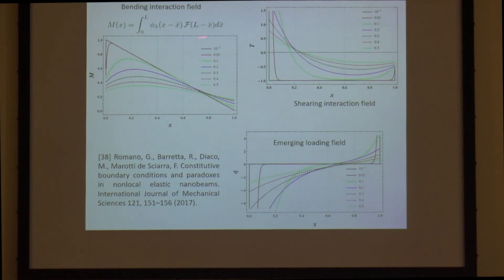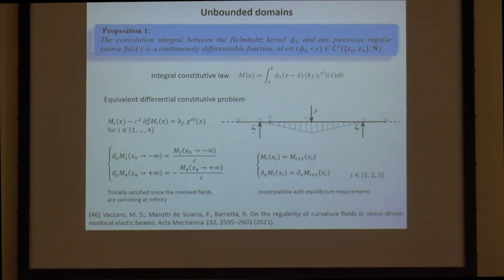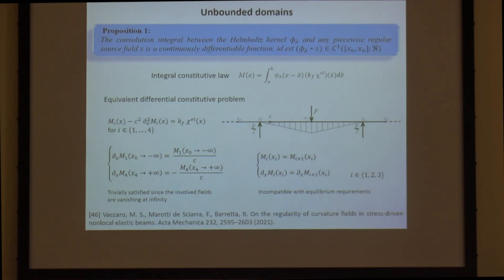If one evaluates the convolution for this cantilever scheme, where the bending moment is a linear function, the result is a non-linear function, which clashes with equilibrium. This means that the Eringen formulation of non-local continuum mechanics cannot apply to structural mechanics. Even for an unbounded domain under three-point forces, the bending moment is not regular and cannot be reproduced by convolution. Therefore, also for unbounded domains in many problems of applicative interest, the solution at a continuum level does not exist under the strain-driven formulation.